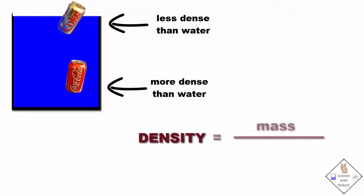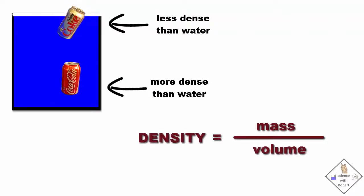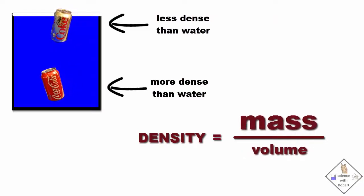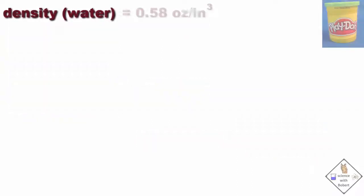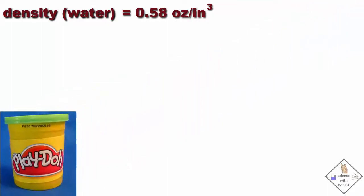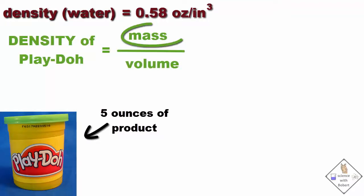Density is mass divided by volume. Since both cans have the same volume, it is their masses that are different that gave rise to the differences in density. The density of water is 0.58 ounces per cubic inch. Play-doh makes its product to be exactly five ounces in its smaller cans. So if we want to calculate the density of this Play-doh, we already know half of what we need to calculate the density. So we just have to determine the volume of the five ounces of Play-doh.